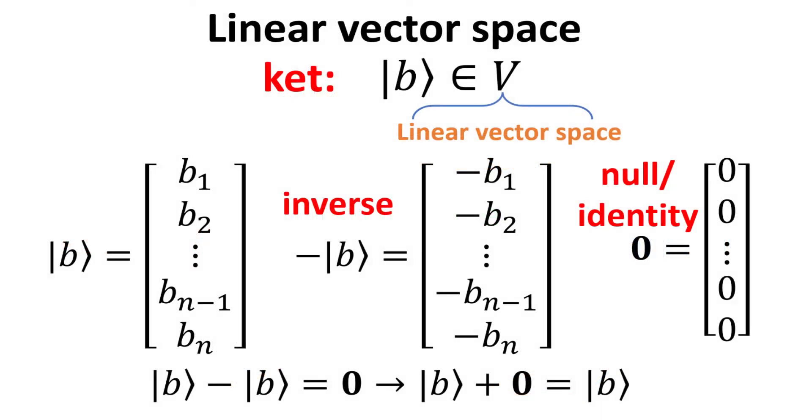The ket is a vector that resides in a linear vector space V. A linear vector space V consists of a set of kets, which may be added and multiplied by scalars in such a way that the operation yields only elements of V. In other words, these mathematical operations between elements of V yields a ket which also belongs to V.